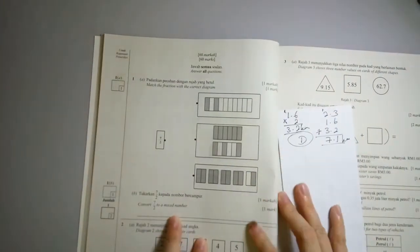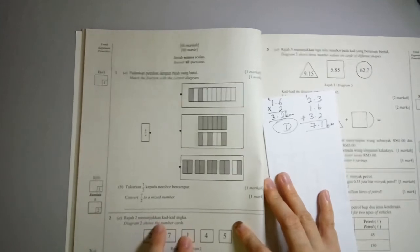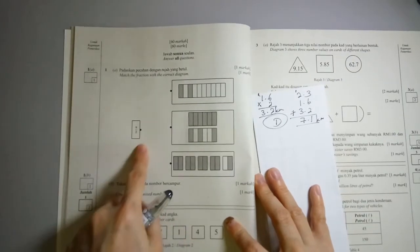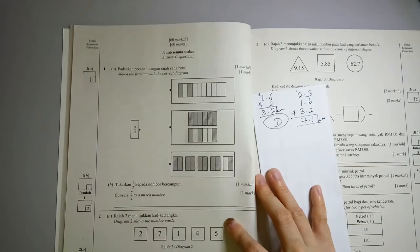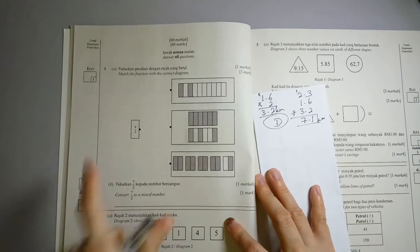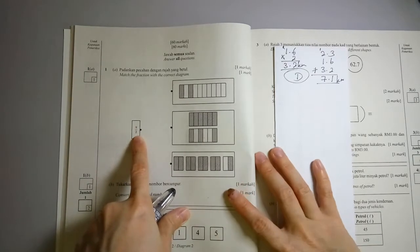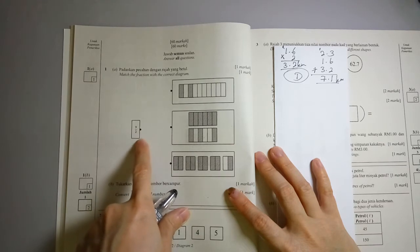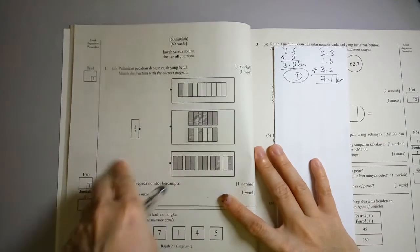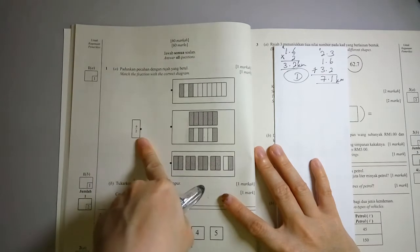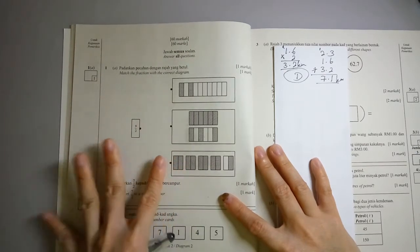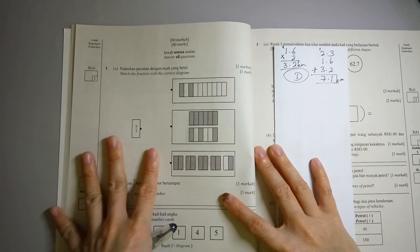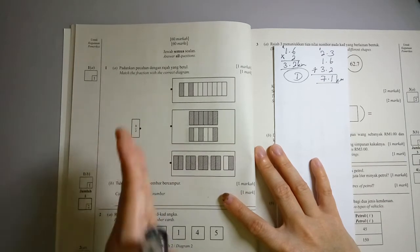Let's look at question 1. It says match the fraction with the correct diagram. 9 over 2. What does it mean? It means that you have 9 out of 2. For every 2 out of 2 is equal to 1. That means you need to have 4 whole basically shapes and half of it.